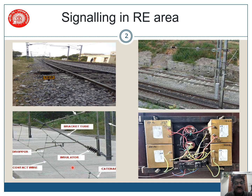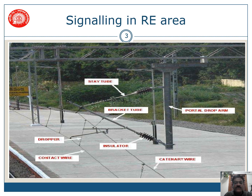These are the insulators, contact wires, and the OHE equipment that is available. This is the filter unit that is used in our signaling system block instruments. Before starting, let us see what the important OHE parts are. We have the contact wire and the catenary wire, the insulator, the dropper, bracket tube, portal drop-off, and the stay tube.